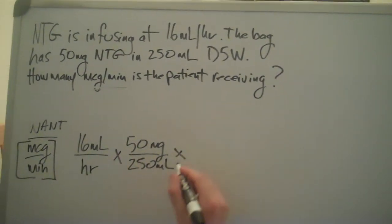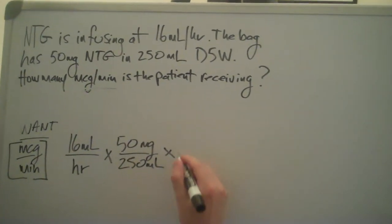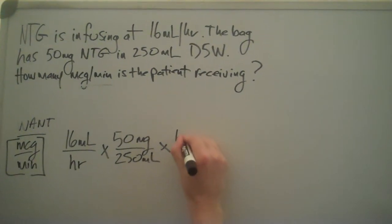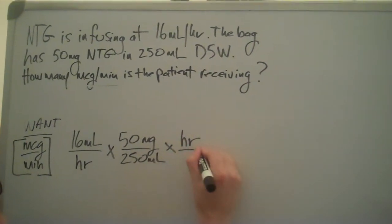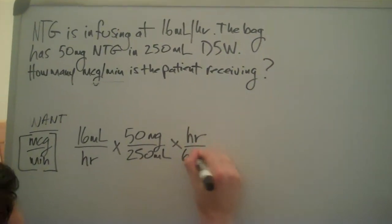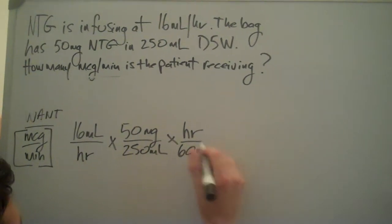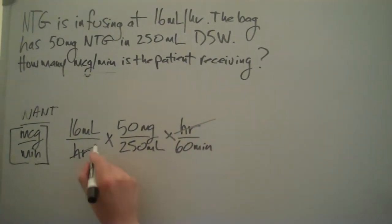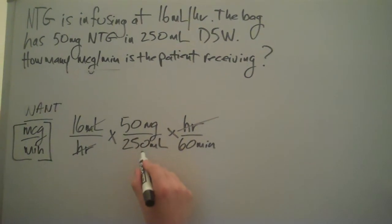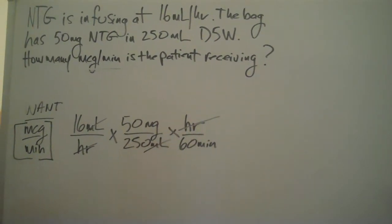So let's start back here. We want minutes, so we need to get rid of the hours. We have one hour equals 60 minutes. Hours cross out. We have mLs, mLs cross out.